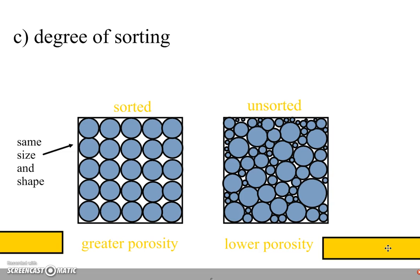So if it were to rain on these two areas, the rain would be able to infiltrate much faster into the soil that is sorted because there's more pore space.